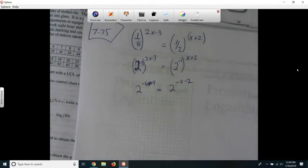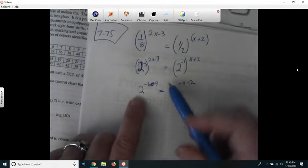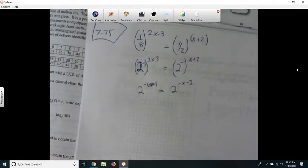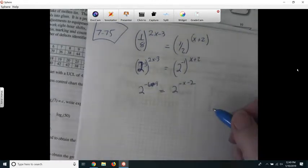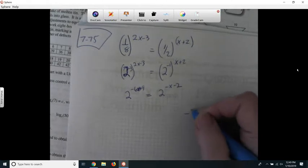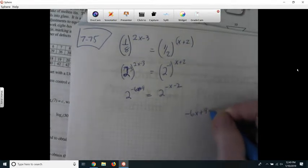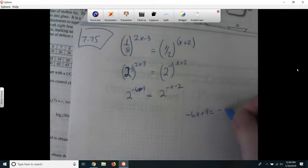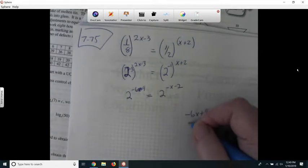Now that I have the same base, I can just set the exponents equal to each other. So over here on scratch paper, I'm going to say negative 6x plus 9 equals negative x minus 2. And then I could add 6x to both sides.